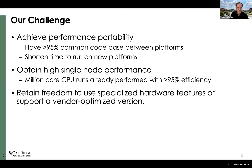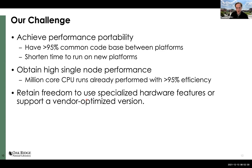What we're after is performance portability — a very common code base between all platforms so it doesn't take long to get up to speed on new machines. Our challenge is not so much scaling, though that took a lot of work in quantum Monte Carlo, but getting really high single-node performance. We also want to retain the freedom to use any specialized hardware on these machines — if somebody implemented one of our key compute kernels in their hardware, we'd certainly want to be able to call it — while still maintaining performance portability.